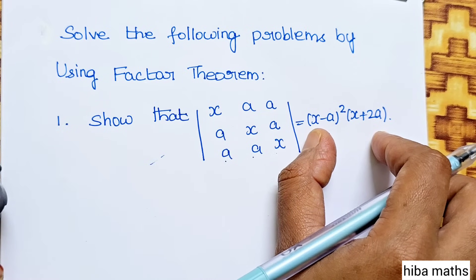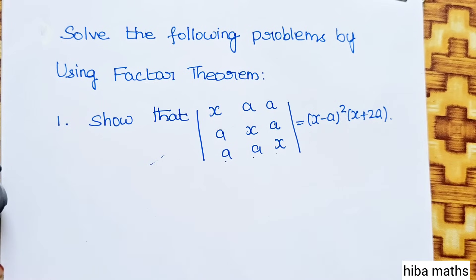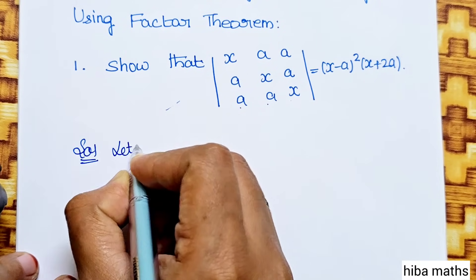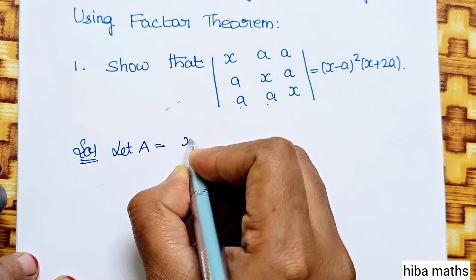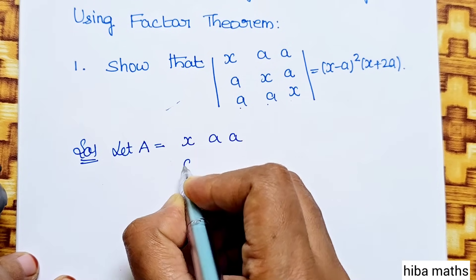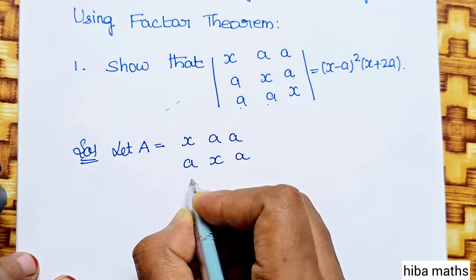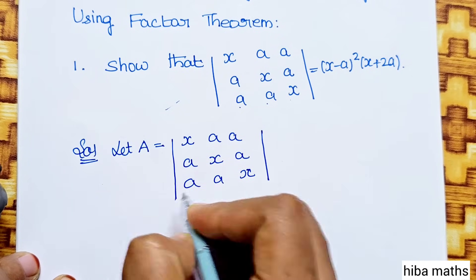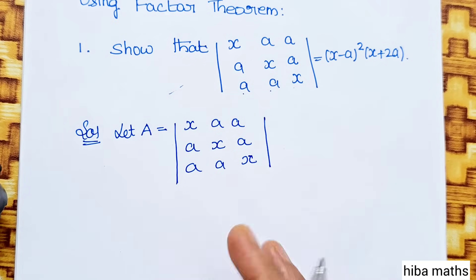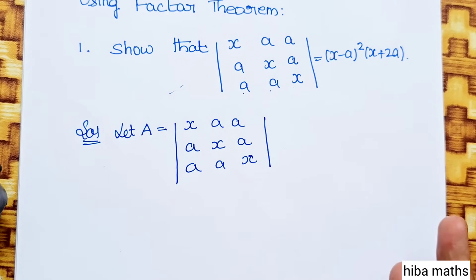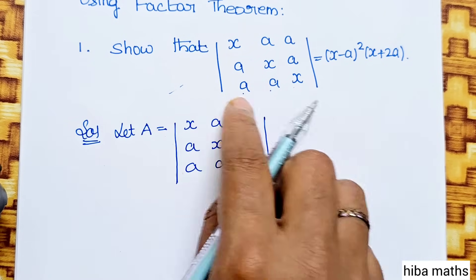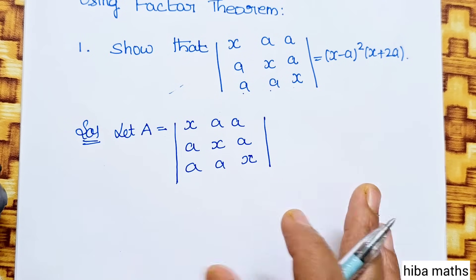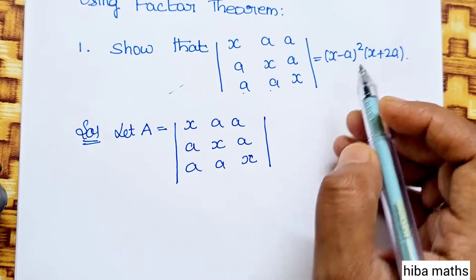In the solution, let A be equal to the determinant with rows (x, a, a), (a, x, a), (a, a, x). If we want to replace a factor, the value of that factor is 0. The degree of the determinant determines how many factors we expect. The first factor is (x minus a).